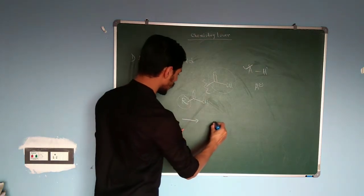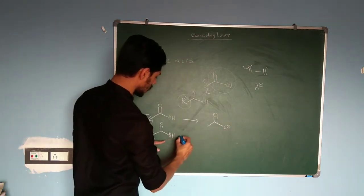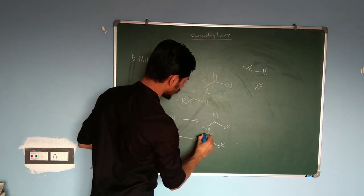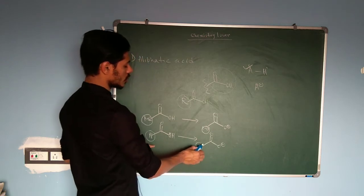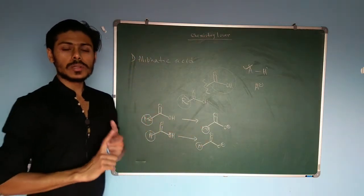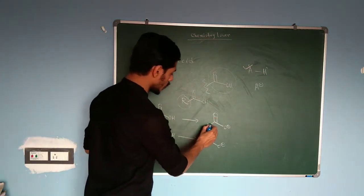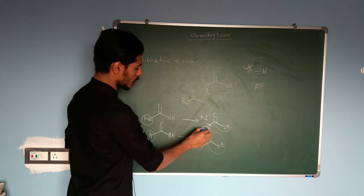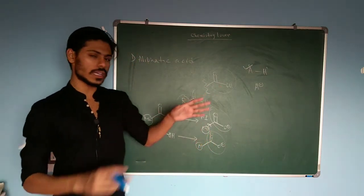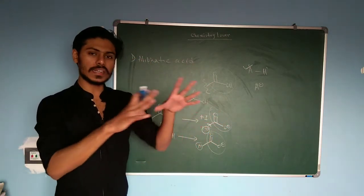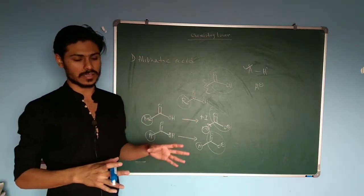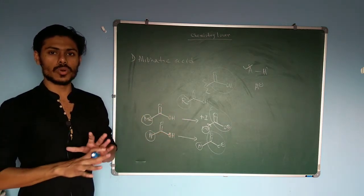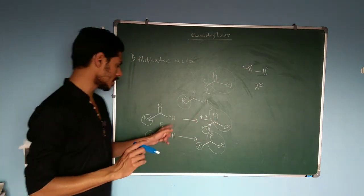For acetic acid the conjugate base is the carboxylate anion with a methyl group attached; for formic acid the carboxylate anion has hydrogen attached. Any anion is destabilized by an electron-pushing group, and methyl shows a +I effect. In acetic acid the methyl group pushes electron into the already negatively charged center, destabilizing it, whereas hydrogen neither pushes nor withdraws electron. Therefore formic acid shows higher acidity than acetic acid.